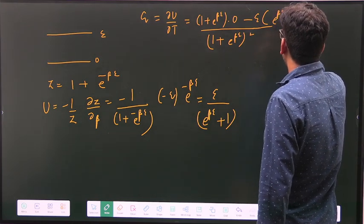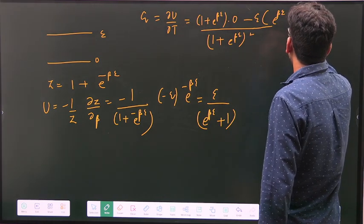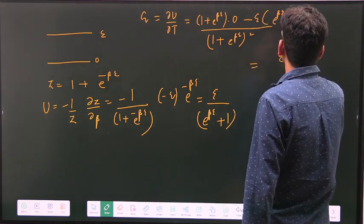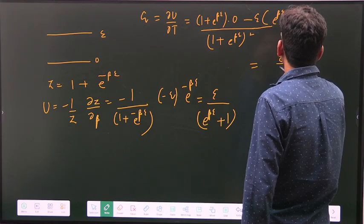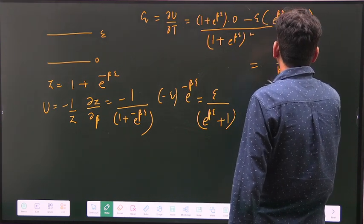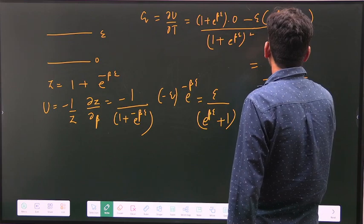will give me e^(βE) into, when I take derivative of this, it will become -E/(k_BT^2), so this will become plus E^2/(k_BT^2), and denominator e^(-βE)(1 + e^(βE))^2.